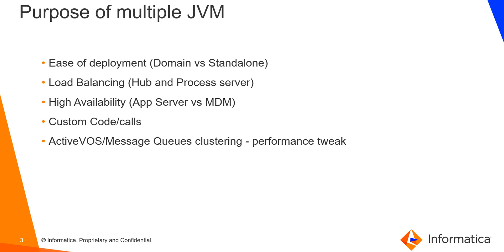Coming to the purpose of maintaining multiple JVMs, these are the primary concepts we need to walk through to decide why we need multiple JVMs. The first one is ease of deployment — deploying the code or EAR file on one JBoss node so it gets automatically deployed onto other JVMs or JBoss instances. This is allowed only in domain mode of JBoss and is not supported in standalone mode. Since MDM is only supported on standalone mode, ease of deployment is not needed here.